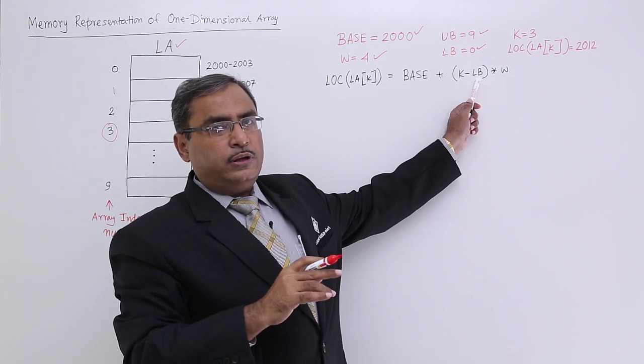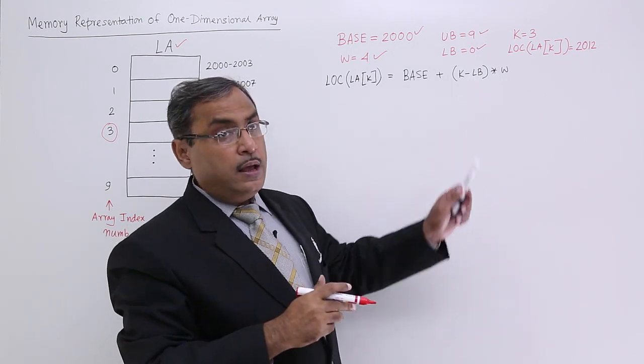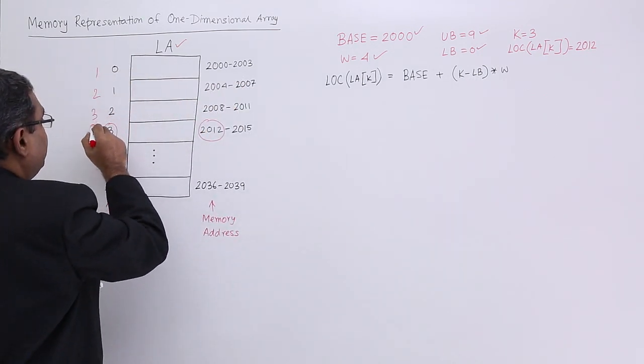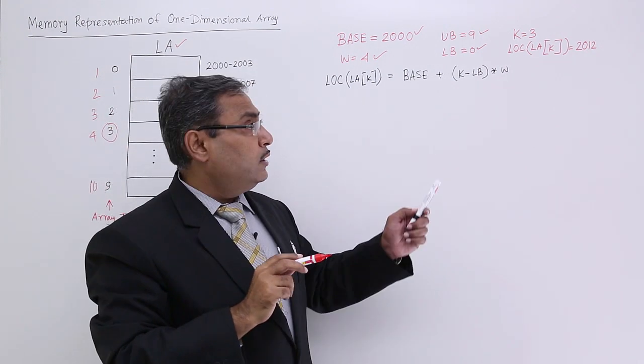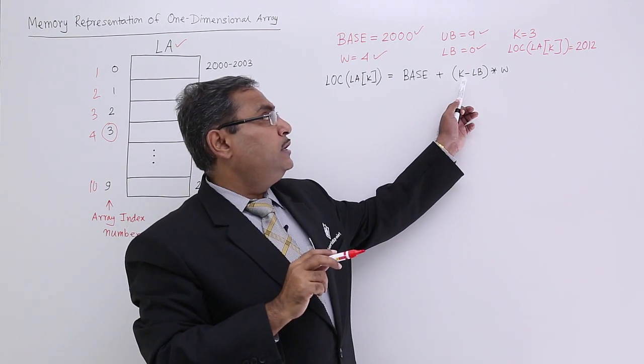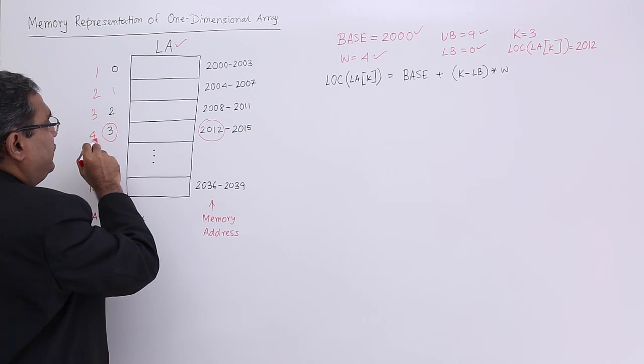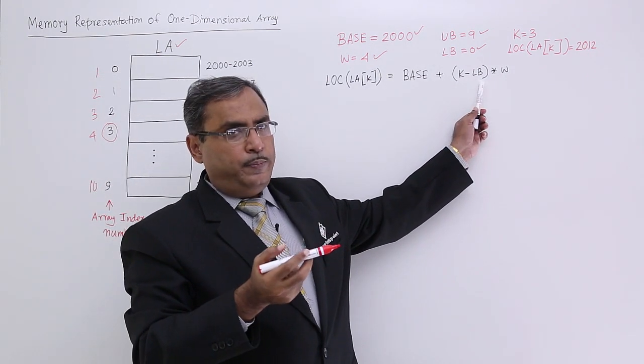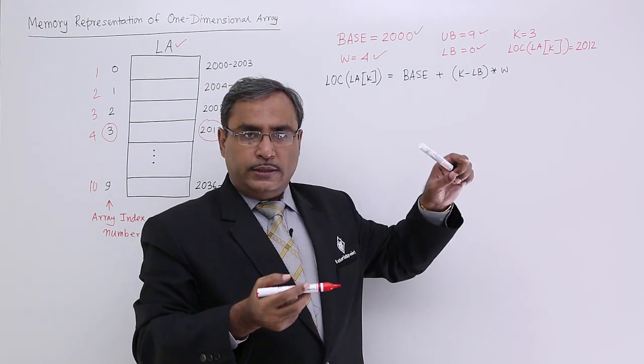Why k minus lower bound? Because here the lower bound is equal to 0, so k minus lower bound means k. But sometimes this particular index can start from 1 also. In that case, location number 3 will become location number 4. So 4 minus 1 because the lower bound will become 1 in that case will be 3, back again into w, that is the width.